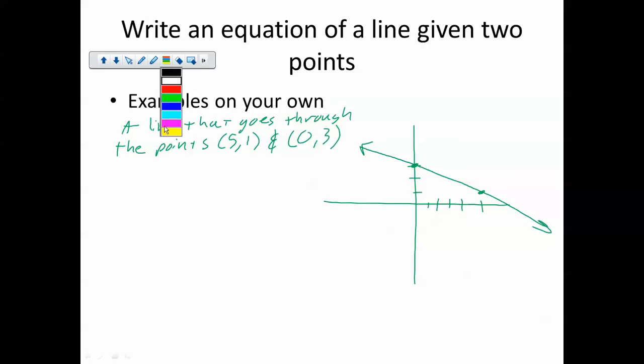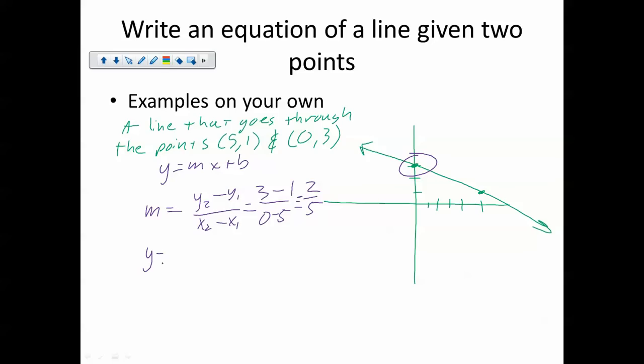We are going to solve this in the same way. We're looking for y equals mx plus b. My slope is y2 minus y1 over x2 minus x1, which here equates to 3 minus 1 over 0 minus 5, which is negative 2 fifths. My slope is negative 2 fifths, and my y-intercept is right there. My y-intercept is 3. So, what's my equation? y equals negative 2 fifths x plus 3.